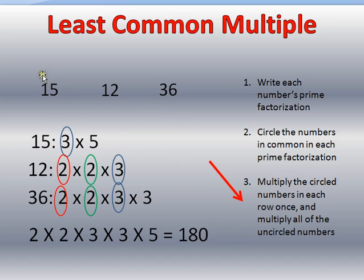Now, if I were to write down all the multiples of 15, all the multiples of 12, and all the multiples of 36, I'd find that 180 is the first number that was in common between all of them. But that's a lot of multiples I have to write out. So if I just break down each of the numbers into their prime factorizations, find the ones in common, multiply the numbers they have in common one time each, and then multiply all the numbers that aren't in common, I'm going to get my least common multiple.